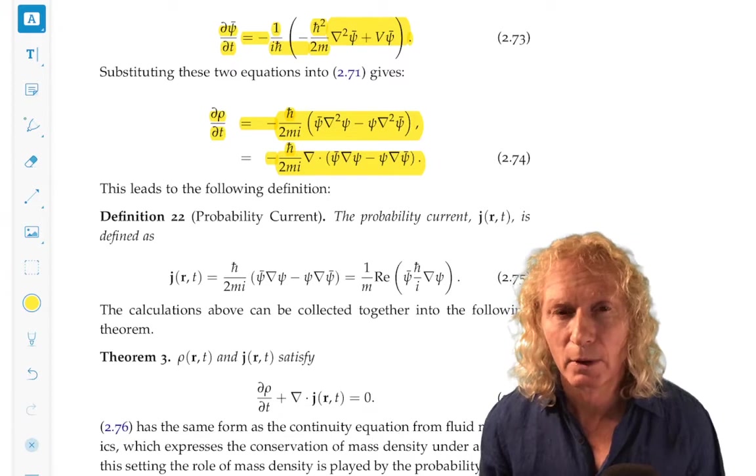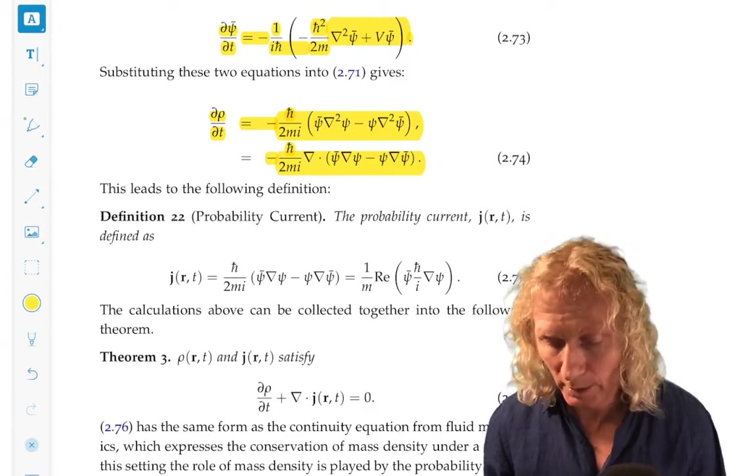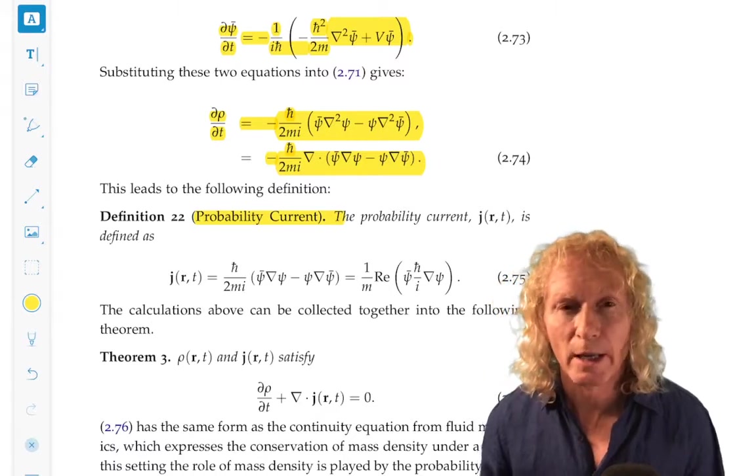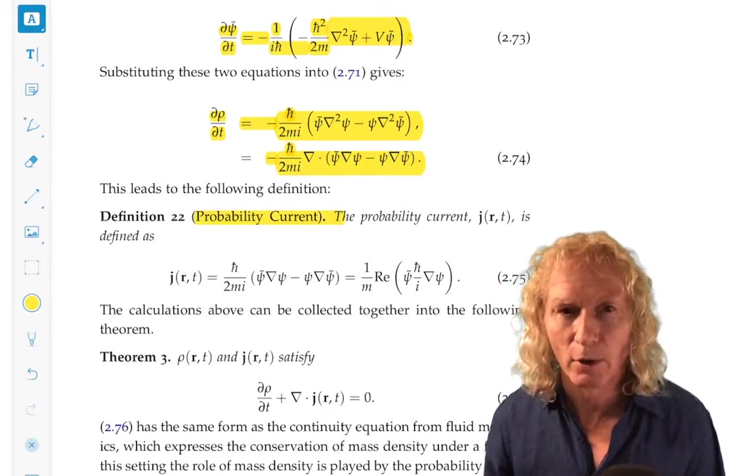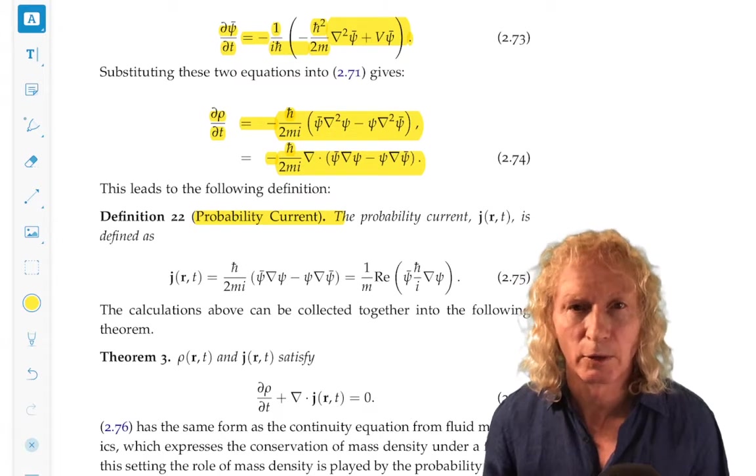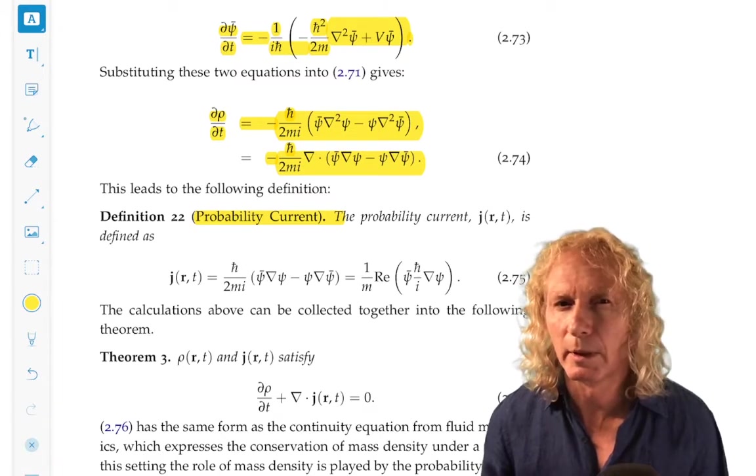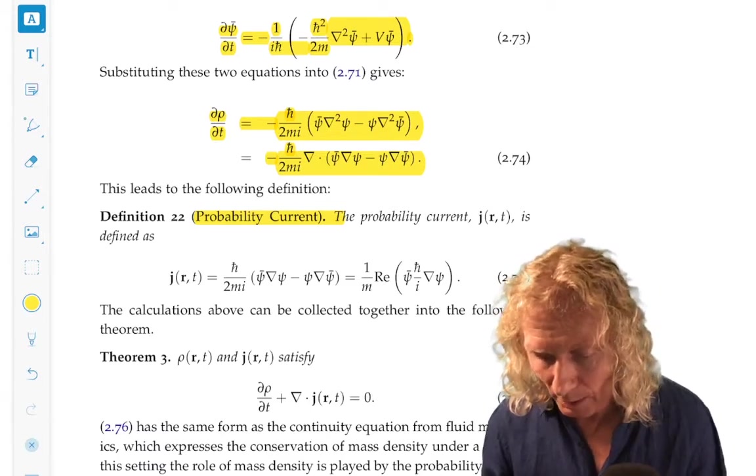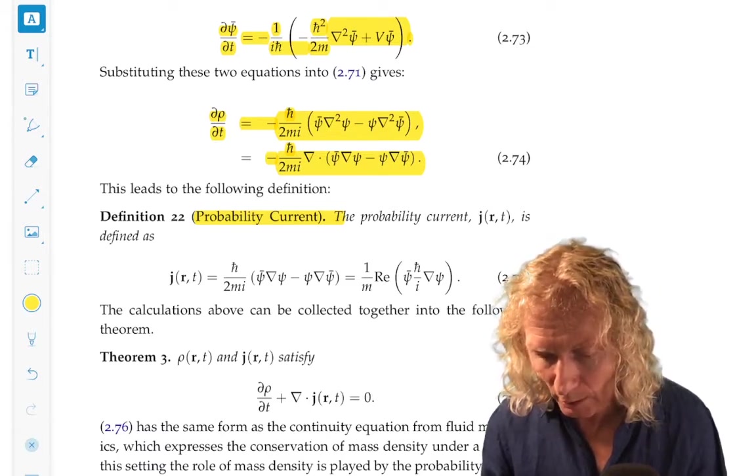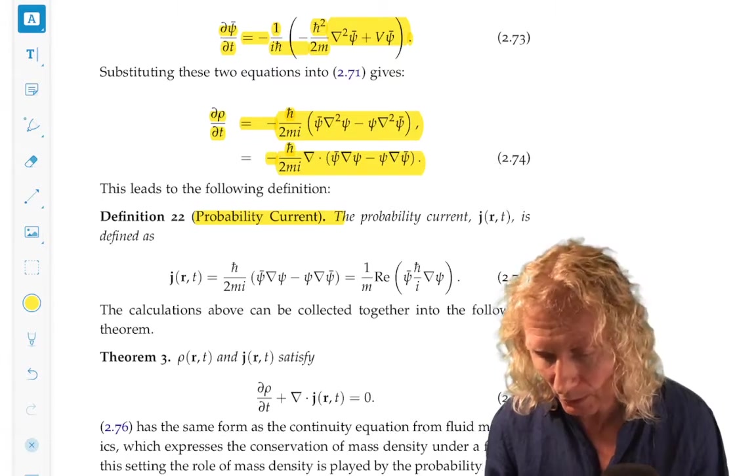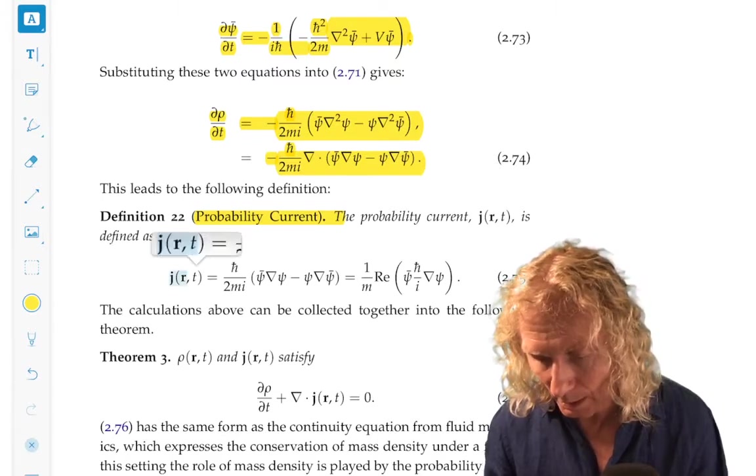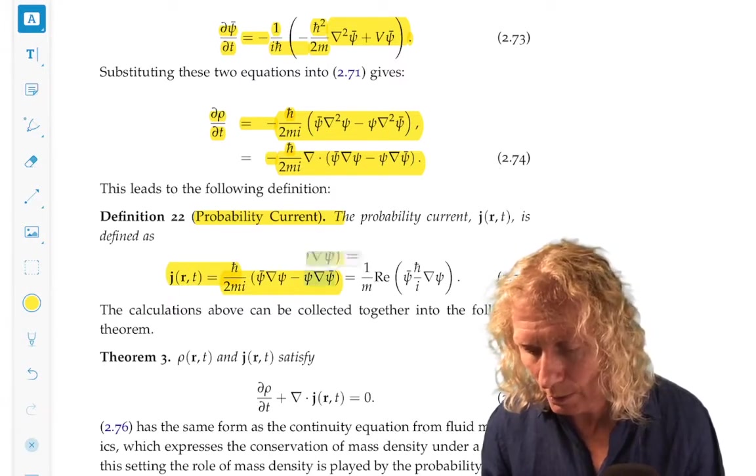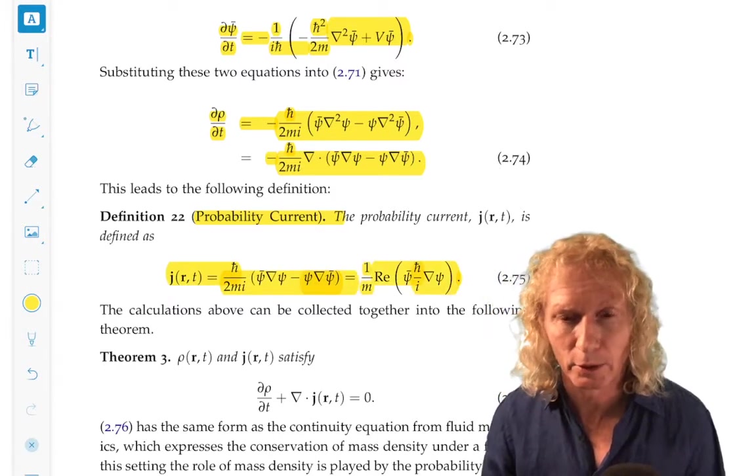So, this gives rise to the following definition of probability current. We call it J, vector J of r and t. R is a vector. Why is probability current a vector? You should be able to see that with the gradients involved. So, the probability current is defined. This is a definition. ℏ over 2mi times this expression, which is equal to the second expression on the right.